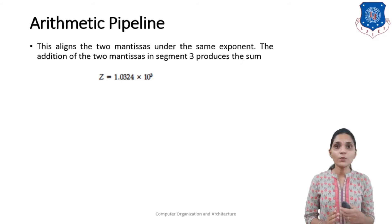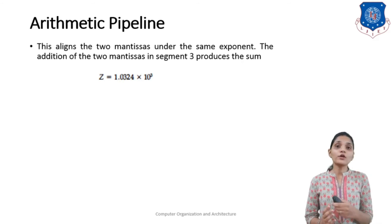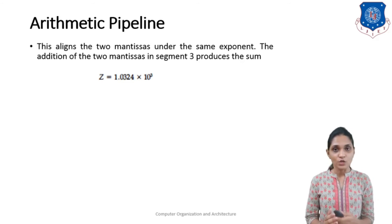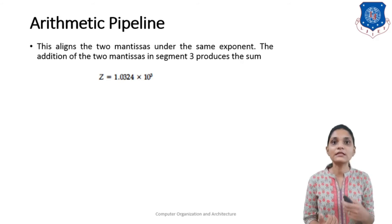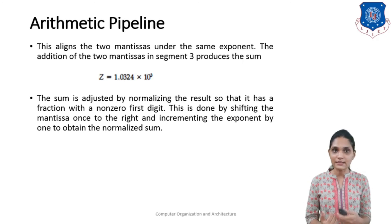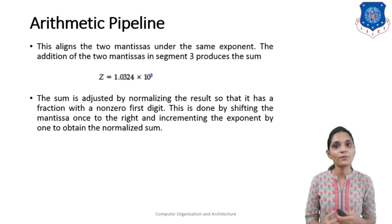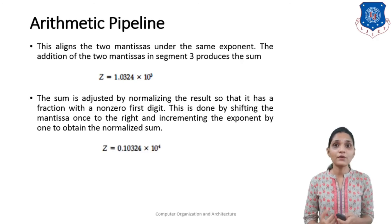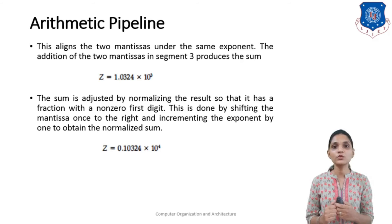Our result 1.0324 is not in normalized form — in normalized form the result should be 0.1-something. So we must normalize the result by shifting the binary point to the left and increasing the exponent by 1. The sum is adjusted by normalizing: shifting the mantissa one place to the right and increasing the exponent by 1. So Z becomes 0.10324 into 10 raised to 4 instead of 10 raised to 3.